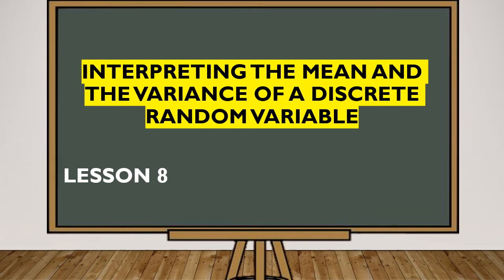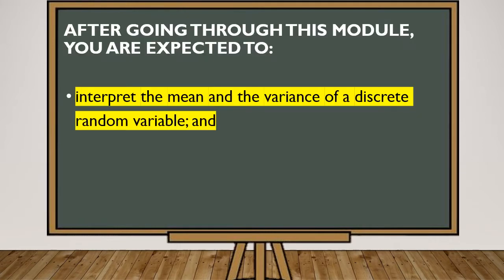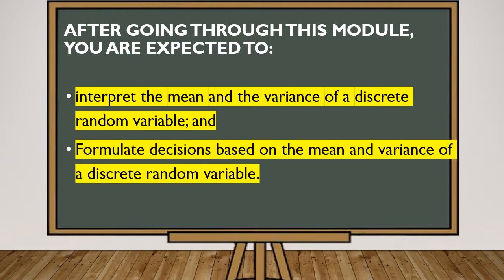Our next lesson — this is Lesson 8 — is all about interpreting the mean and the variance of a discrete random variable. In this lesson, you are expected to interpret the mean and the variance of a discrete random variable, since we are done with calculating them. This time, you are going to interpret what the mean and variance mean, and formulate decisions based on them.